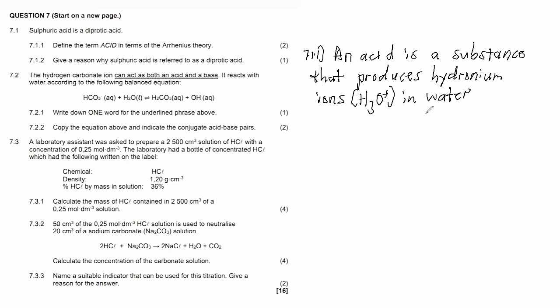7.1.2 says give a reason why sulfuric acid is referred to as a diprotic acid. As we've been told here, sulfuric acid is a diprotic acid. Diprotic acid means it donates two protons.